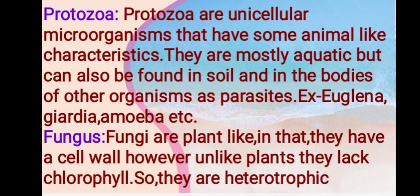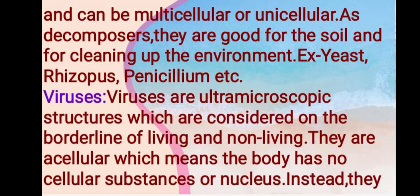Protozoa are unicellular microorganisms with animal-like characteristics; they are mostly aquatic but can also be found in soil and in the bodies of other organisms as parasites. Examples include Euglena, Giardia, and Amoeba. Fungi are plant-like in that they have a cell wall; however, unlike plants, they lack chlorophyll, so they are heterotrophic. They can be multicellular or unicellular and act as decomposers. Examples: yeast, Rhizopus, Penicillium.